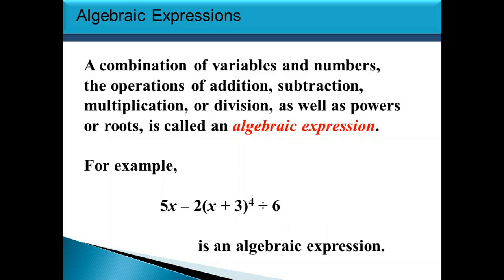So for example, this is an algebraic expression. We have 5 times x, minus 2 times the expression (x + 3) being raised to the fourth power, divided by 6. Notice we have a combination of numbers and variables, and we also have addition, subtraction, multiplication, division, and even a power in this algebraic expression.